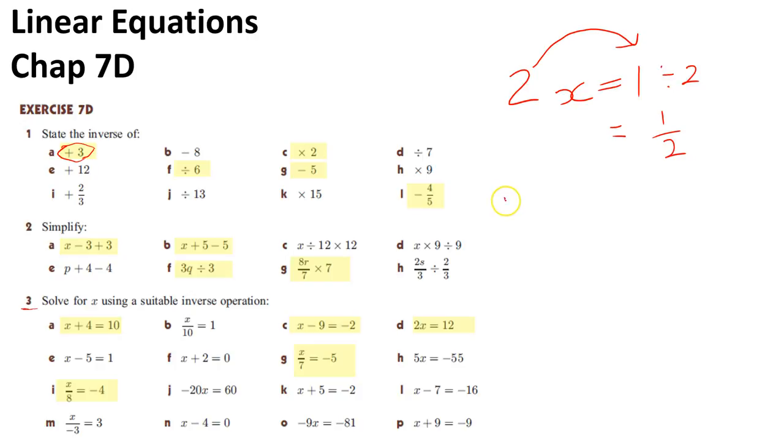If I had 4 plus x equals 2, the 4, remember, is a little plus 4, so if I'm going to move that across, I have to subtract 4, and that leaves me with x equals 2 take 4. So if we looked at a harder example in here, something like this one here,